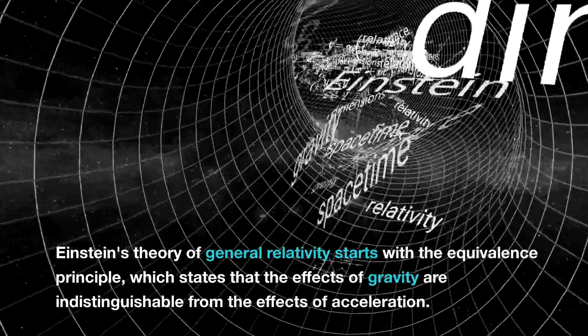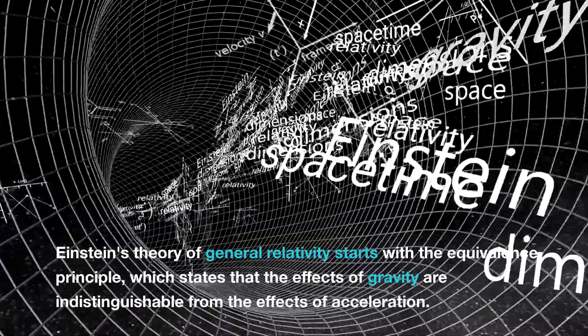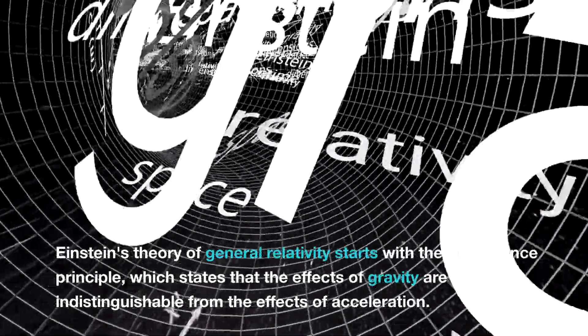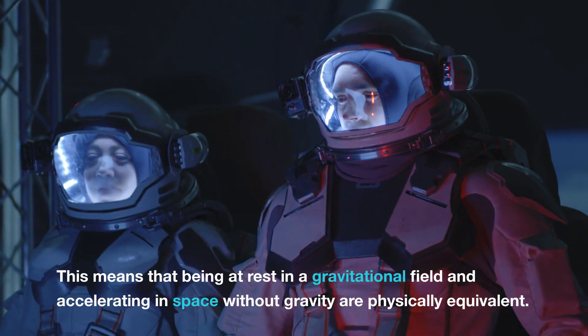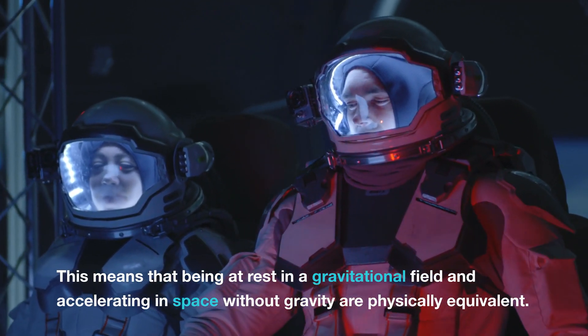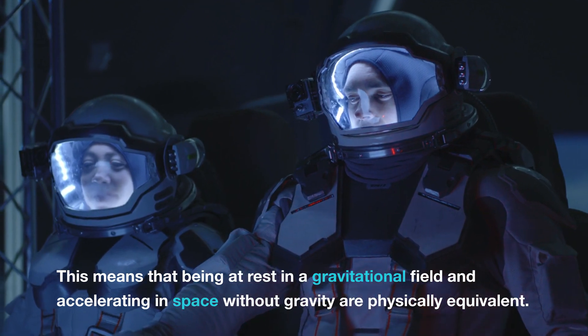Einstein's theory of general relativity starts with the equivalence principle, which states that the effects of gravity are indistinguishable from the effects of acceleration. This means that being at rest in a gravitational field and accelerating in space without gravity are physically equivalent.